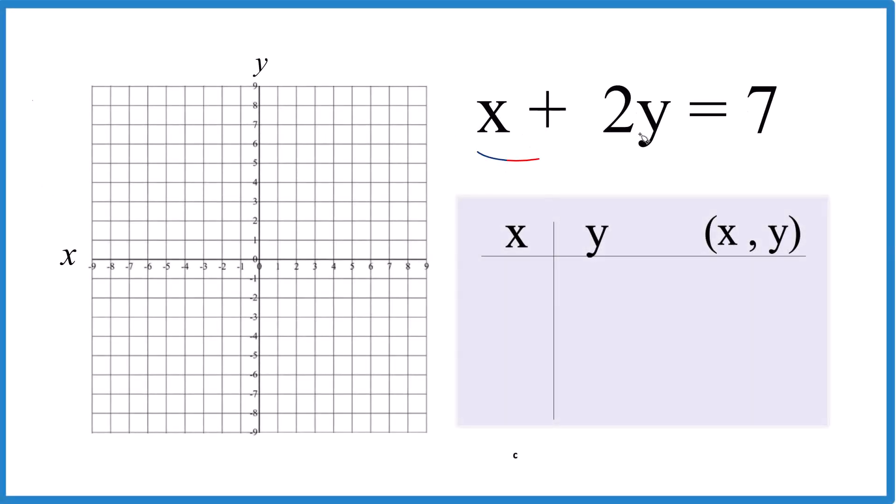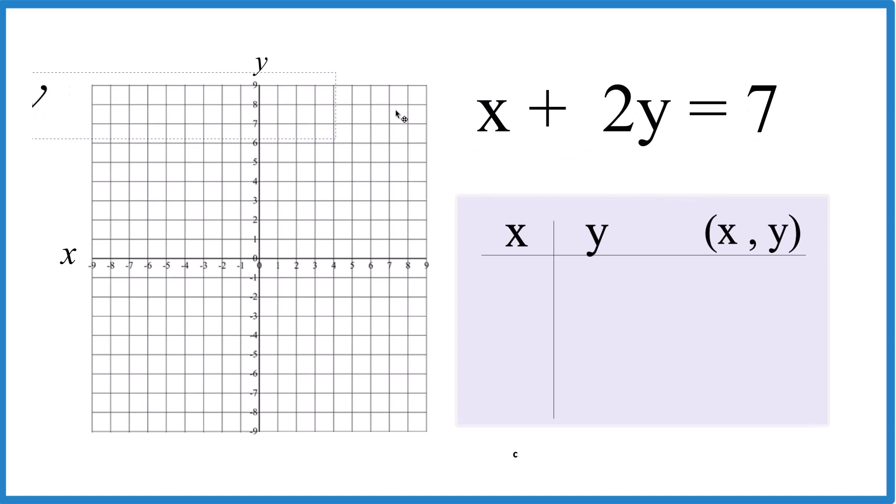Let's graph this equation. We have x plus 2y equals 7. A few ways you could do this. You could use slope-intercept form to graph this equation. You just need to get this form right here with y by itself, mx plus b.